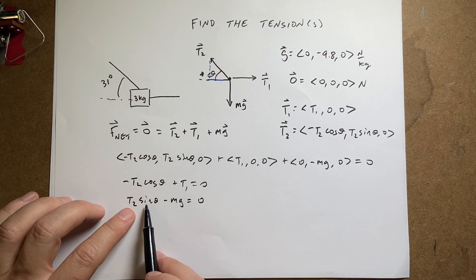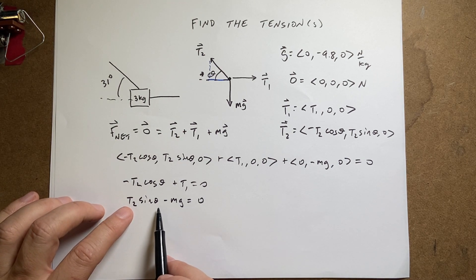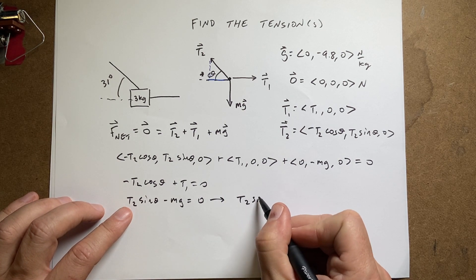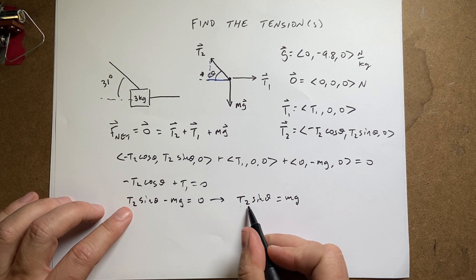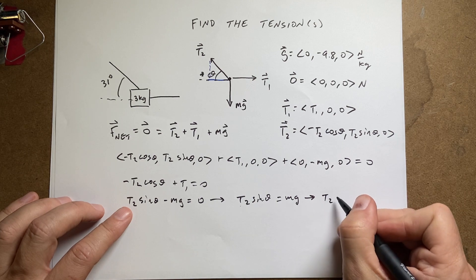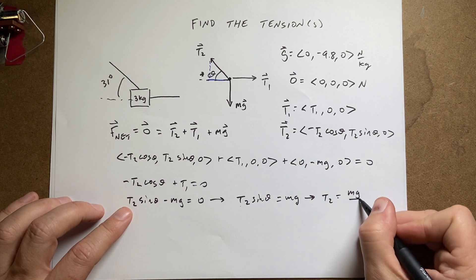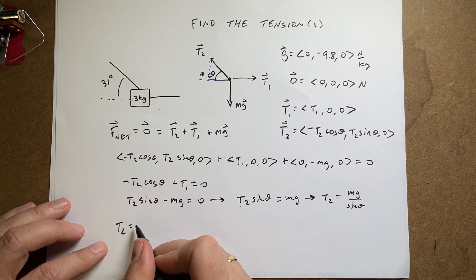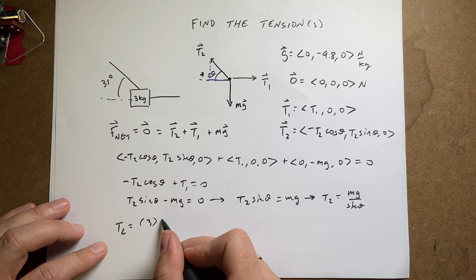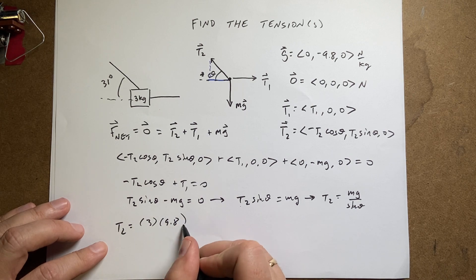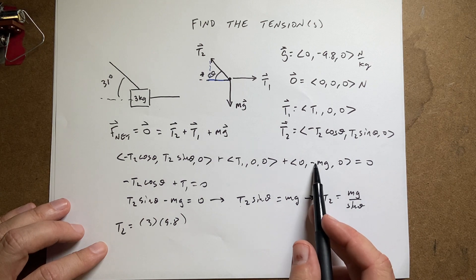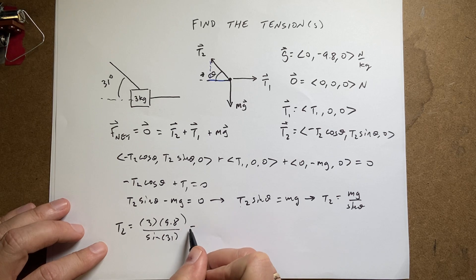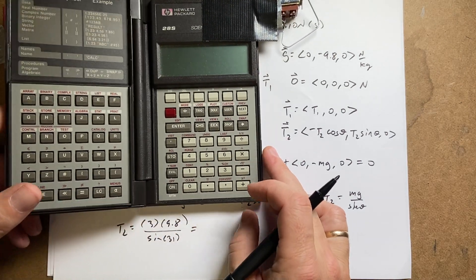Right here I know everything in the y equation except for T2. If I add mg to both sides I get T2 sine theta equals mg. Dividing both sides by sine theta gives T2 equals mg over sine theta. So T2 equals m (which is 3) times g (9.8 — not negative 9.8, because I've already taken the sign into account) divided by sine of 31.